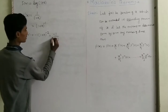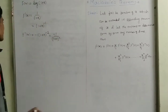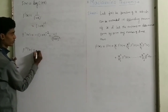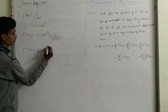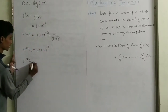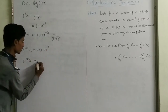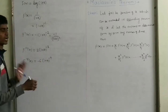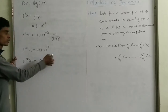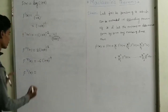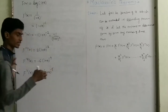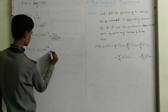So f''(x) = -1/(1+x)². Now the third derivative: this power is multiplied — minus 1 times minus 2 becomes plus 2, power decreases by 1 to minus 3, and derivative of (1+x) is 1. For the fourth derivative: minus 3 is multiplied, so minus 2 times minus 3 becomes minus 6, power decreases by 1 to minus 4, and derivative of (1+x) is 1. For the fifth derivative: minus 4 is multiplied to minus 6, minus times minus becomes plus, so plus 24; power decreases by 1 to minus 5, and derivative of (1+x) is 1.